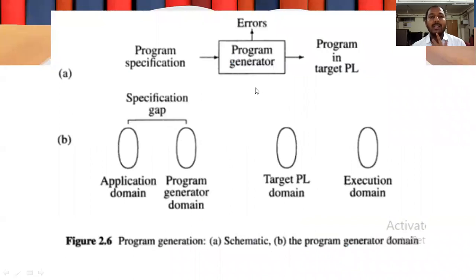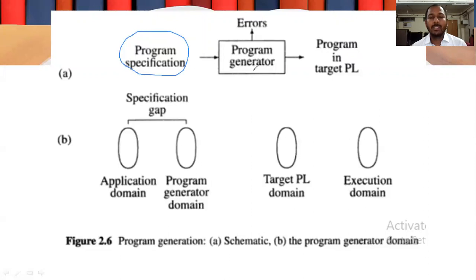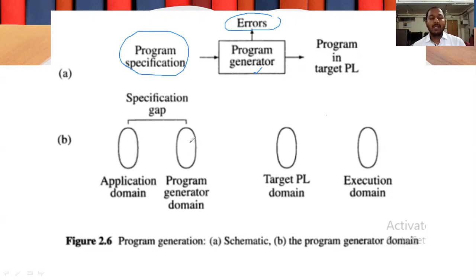This diagram shows that program specification is taken as input by the generator, errors are given if any, and the target programming language output is the result. Now let us go back to lecture number two.